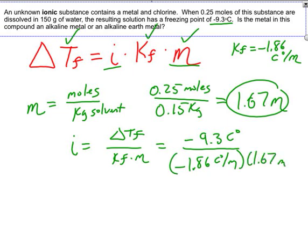So in this situation it will be negative 9.3 Celsius degrees over negative 1.86 Celsius degrees per molal times 1.67 molal. And you'll notice there are no units to the Van't Hoff factor. It is just a number. So all the units should cancel out. And when I do this, I should get i is equivalent to 3.